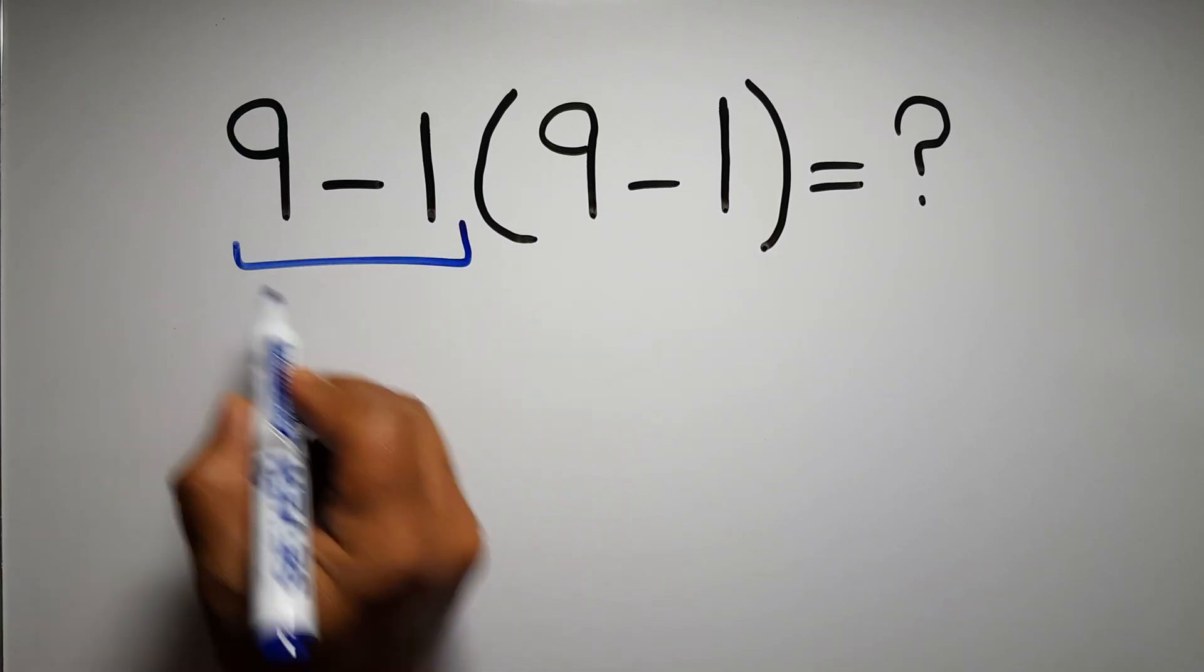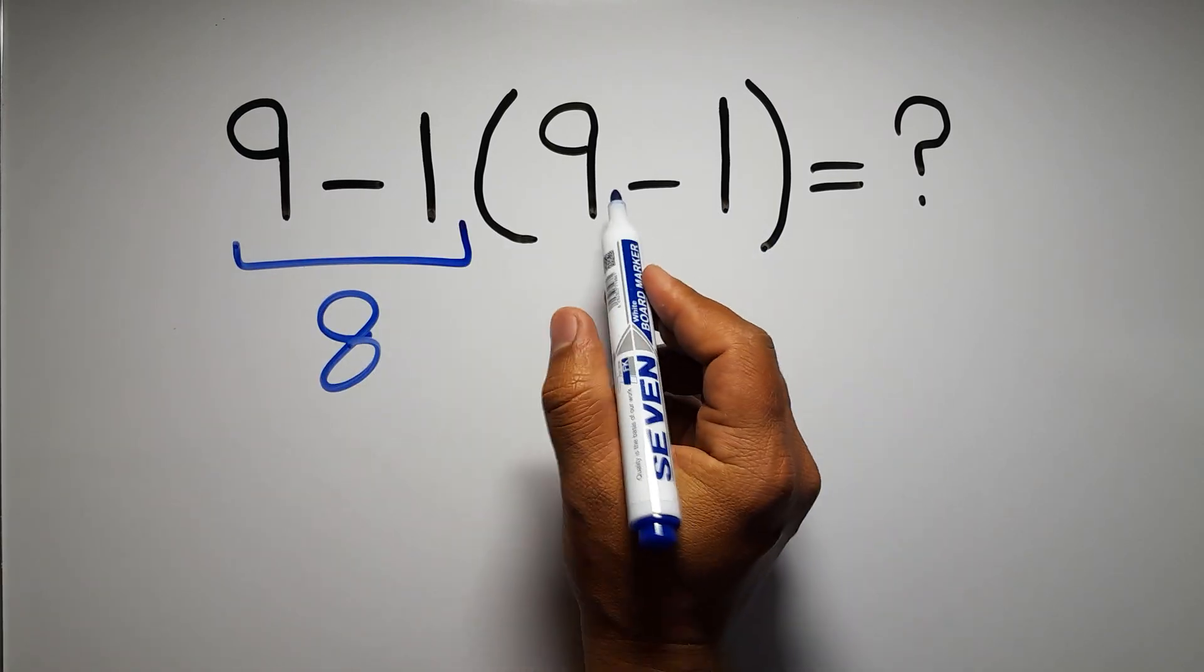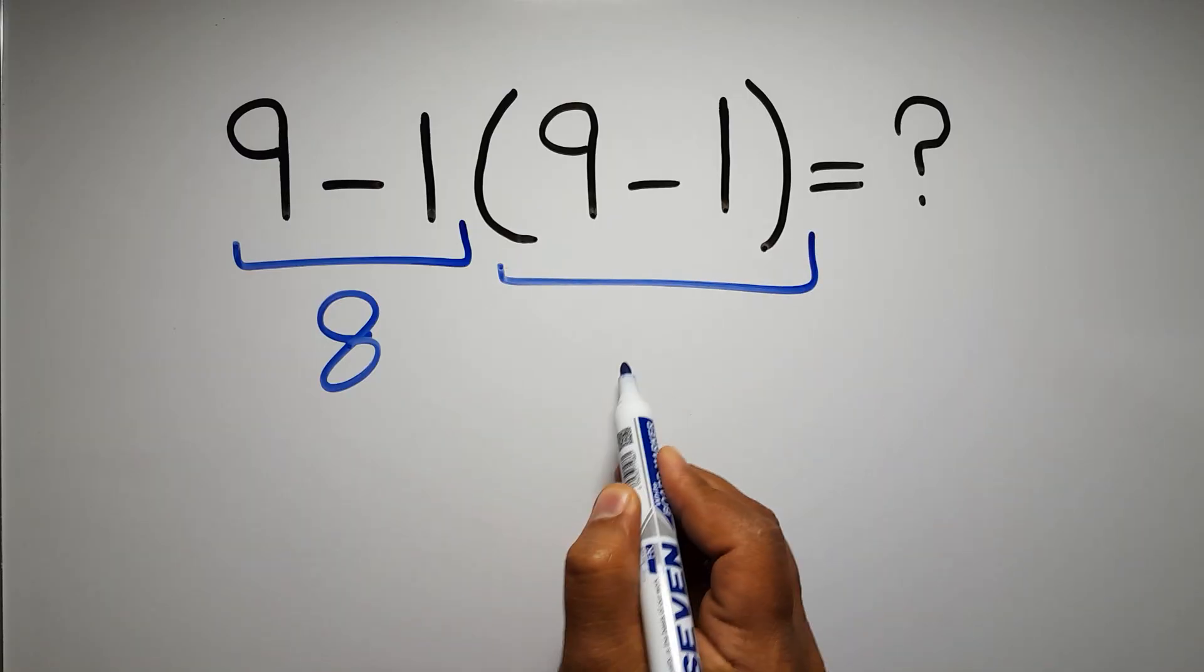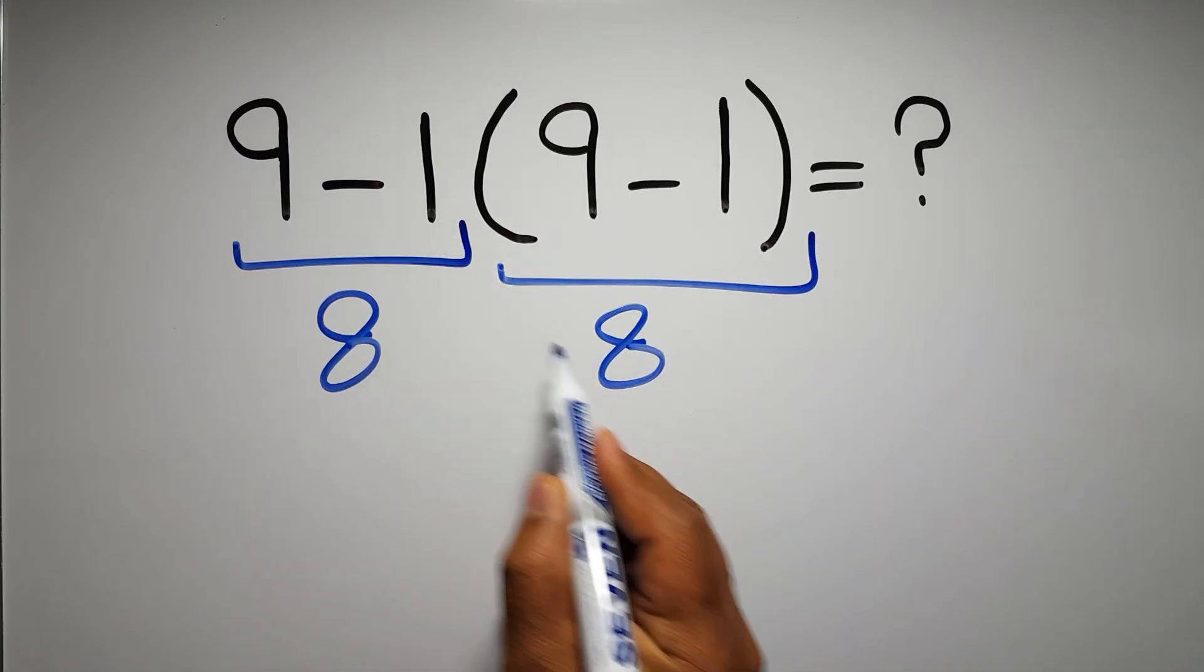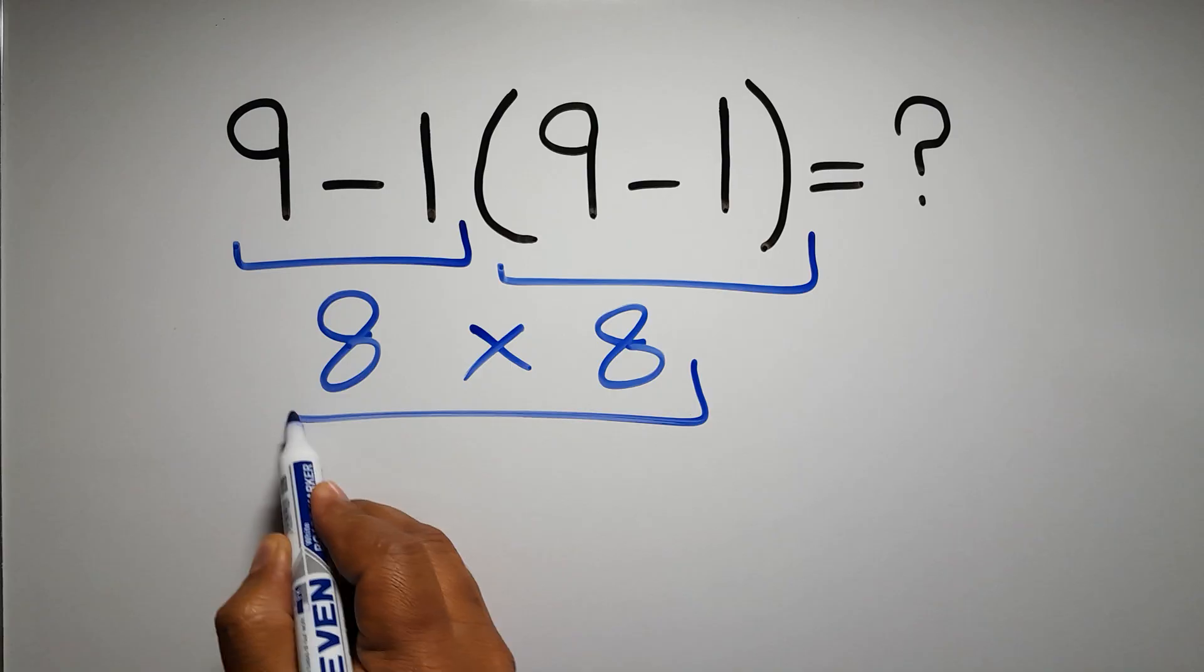9 minus 1 gives us 8, and again here we have 9 minus 1, so 8 times 8, which equals 64.